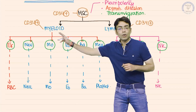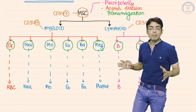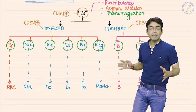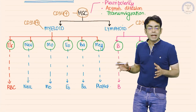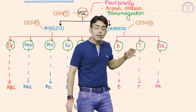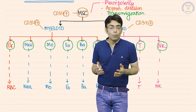In leukemia, the problem can arise either from the myeloid blast or the lymphoid blast. The leukemia arising from a myeloid blast is called myeloid leukemia, and the leukemia arising from a lymphoid blast is called lymphoid leukemia. So we have two kinds of leukemia based on the cell of origin.